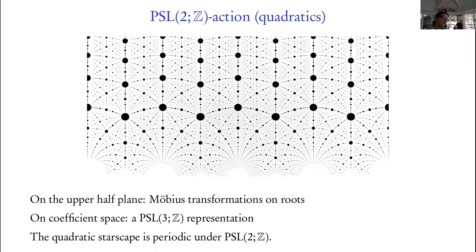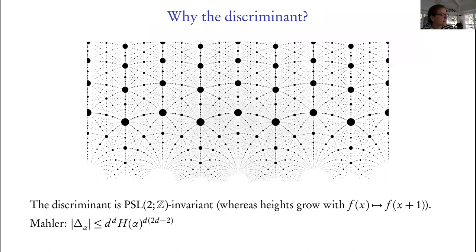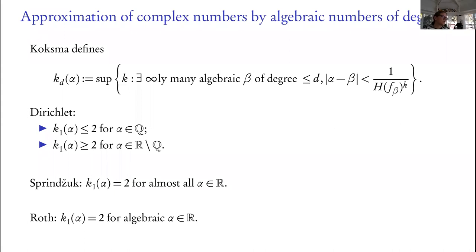SL(2,Z) acts as Möbius transformations on the upper half plane — on the roots — and there's also a representation on the coefficient space: a representation of PSL(2,Z) in PSL(3,Z) acting on the coefficients by composing on the inside with your Möbius transformation. When you draw with the discriminant, it's actually periodic with respect to SL(2,Z). There is a relationship between discriminant and height, but you don't expect an inequality in the other direction.